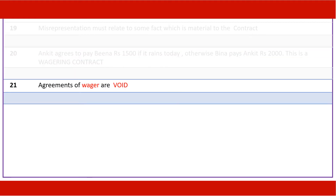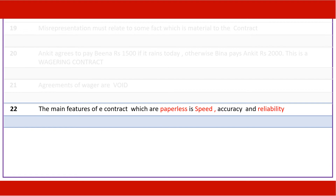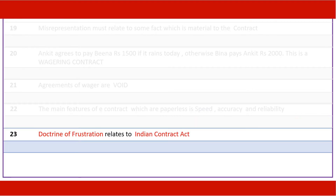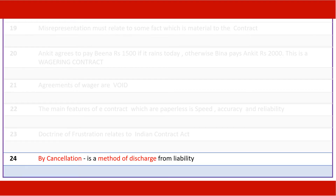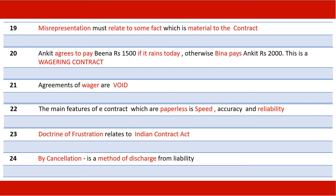Agreements of wager are void. The main features of an e-contract, which are paperless, are speed, accuracy and reliability. The doctrine of frustration relates to the Indian Contract Act. By cancellation is a method of discharge from liability. Misrepresentation must relate to some fact which is material to the contract.